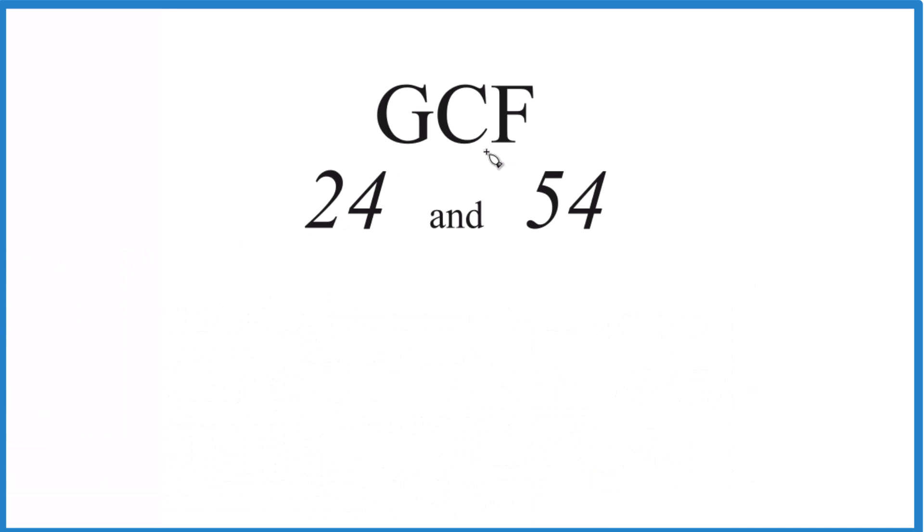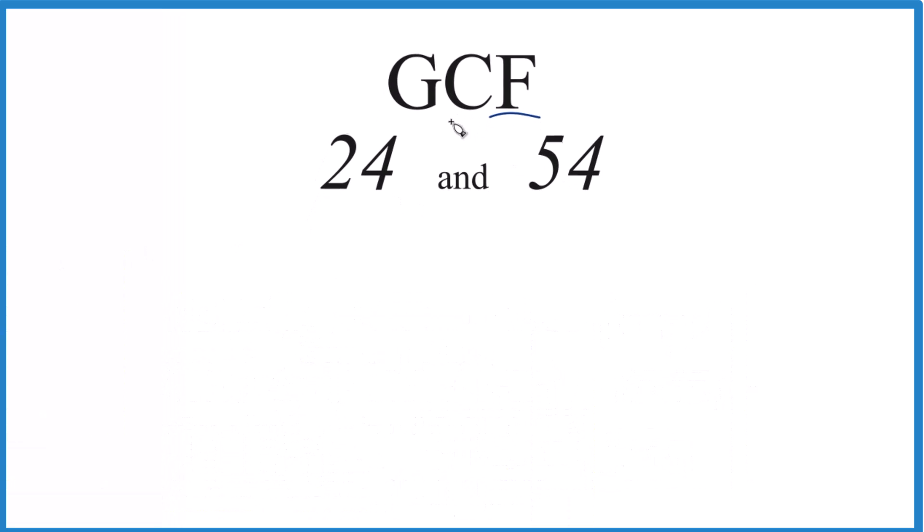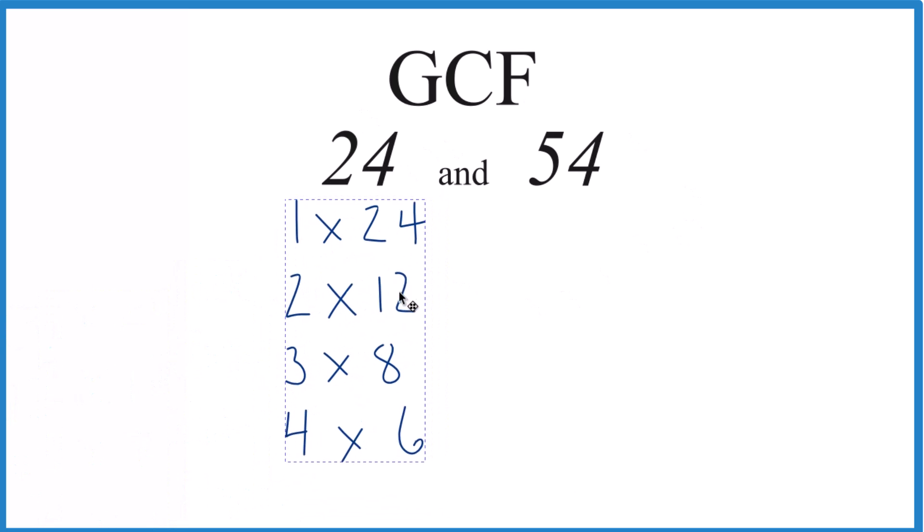So what we do, we find the factors for 24 and 54, look at the common factors, and then choose the greatest common factor. That's the GCF. So for 24, we end up with these as the factors of 24.